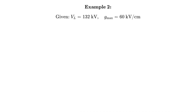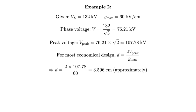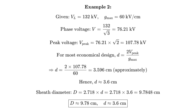Example 2: A 132 kV three-phase system where the dielectric stress allowed is 60 kV per centimeter. Phase voltage V = 132 / √3 = 76.21 kV. Peak voltage = 76.21 × √2 = 107.78 kV. Then the most economical diameter d = (2 × 107.78) / 60 = 3.6 centimeters. And the sheath diameter D = 2.718 × 3.6 ≈ 9.78 centimeters. So the cable should have a conductor diameter of 3.6 cm and an internal sheath diameter of 9.78 cm.